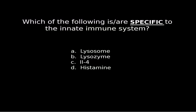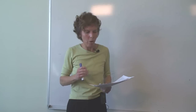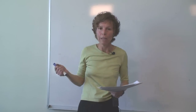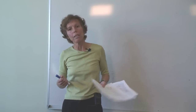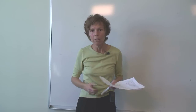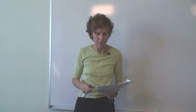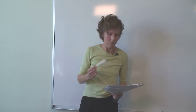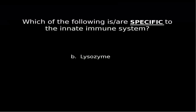Looking at choices C and D: IL-4 is a cytokine we'll get to later — interleukin meaning essentially 'between leukocytes.' Histamine is released by mast cells, which we'll also get to later. Histamine is very instrumental with regard to inflammation — as anyone with allergies knows — but it's not specific to innate immunity.